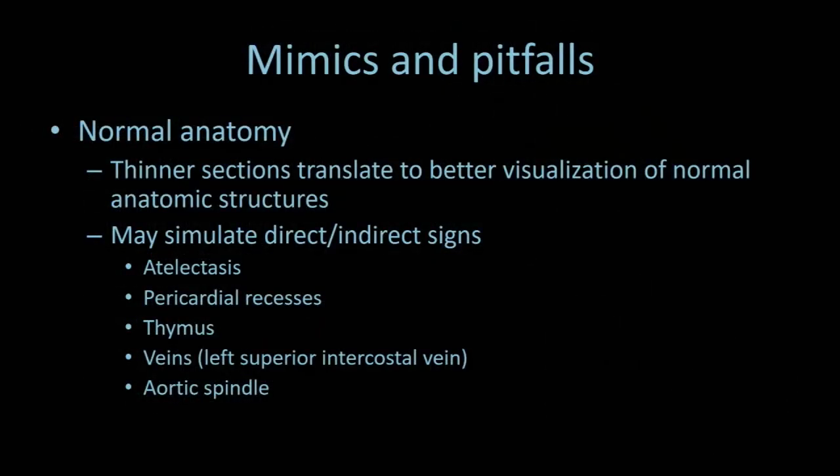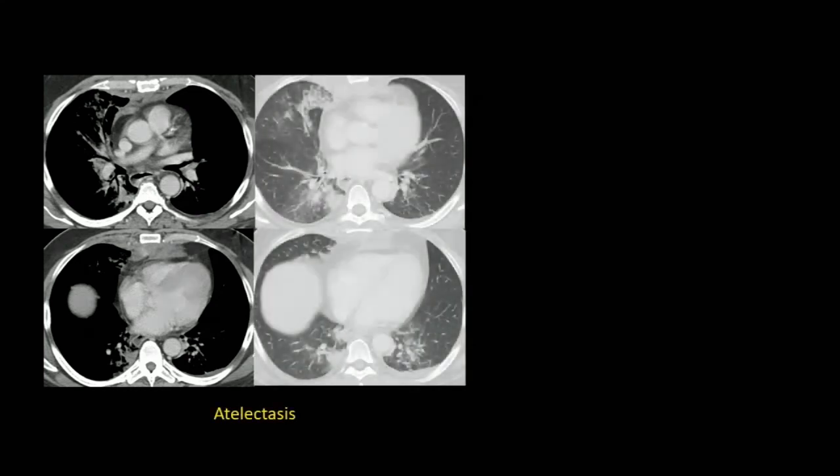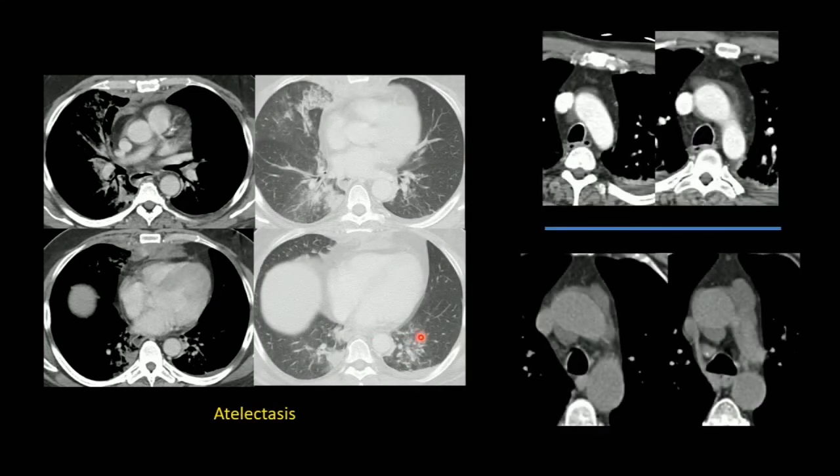Normal anatomy can also be tricky. Sometimes it can simulate the indirect sign of a mediastinal hematoma. It looks like there's some high attenuation material adjacent to the descending aorta. Put it on lung windows—that's actually just atelectasis. This patient has low attenuating material surrounding their ascending aorta. This measured about 10 Hounsfield units—these are simply pericardial recesses.